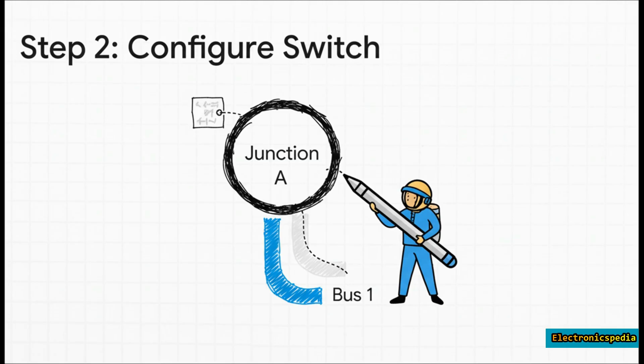It gives the switch a BDF address—let's say Bus 0, Device 1, Function 0. Then it tells the switch, 'Okay, from now on, the highway connected to your first port is called Bus 1, and the highway on your second port is Bus 2.' The explorer is literally drawing the map as it goes along.